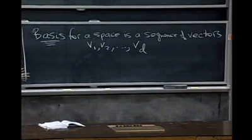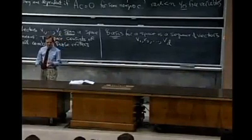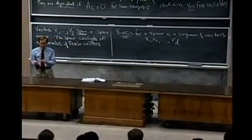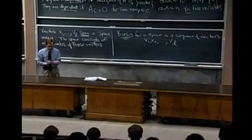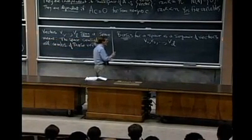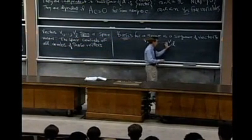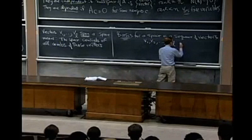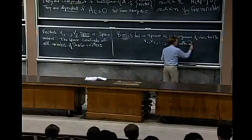I've got enough vectors and not too many. It's a natural idea of a basis. So a basis is a bunch of vectors in the space, and so it's a sequence of vectors with two properties.